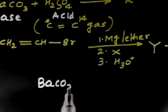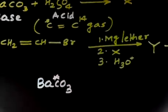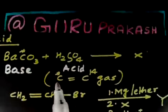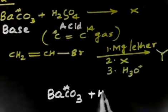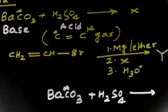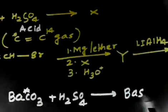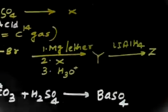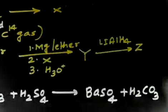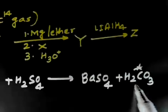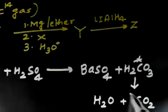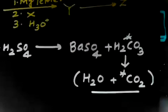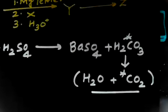We have BaCO3 where this carbon is a radioactive carbon — C14. So we add H2SO4. First it forms BaSO4 plus H2CO3, and the carbon is radioactive. This molecule is not stable, so it breaks into H2O plus CO2, and this CO2 contains the radioactive carbon.